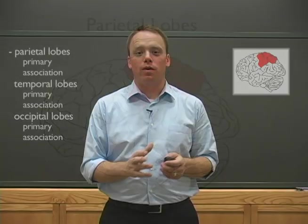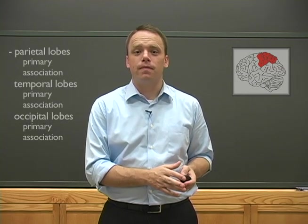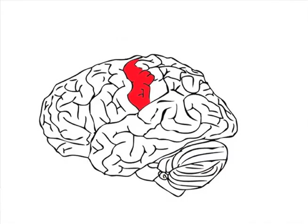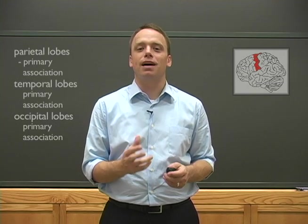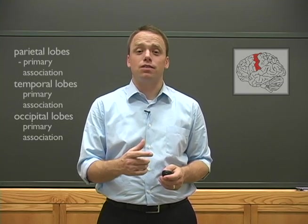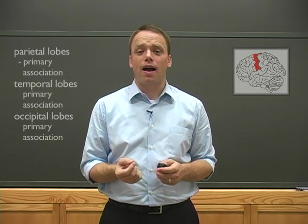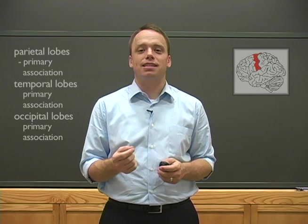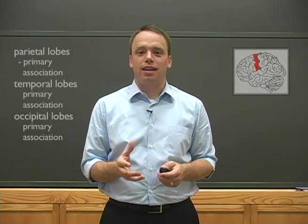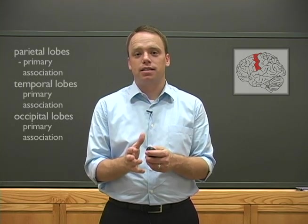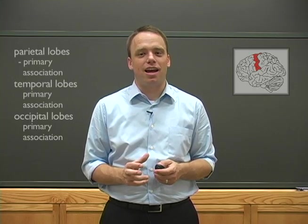As with other lobes, we make a distinction here between the primary sensory area and the association areas for the parietal lobes. The primary sensory area is called the somatosensory cortex, and it's located posterior to and runs parallel to the central sulcus. Just as the primary motor cortex contains the motor homunculus — a direct mapping of all the muscles it controls — the somatosensory cortex has a direct mapping of all the somatic senses it receives. This representation is somewhat distorted in that the size of a given area corresponds to the sensitivity of the body area, not its size.